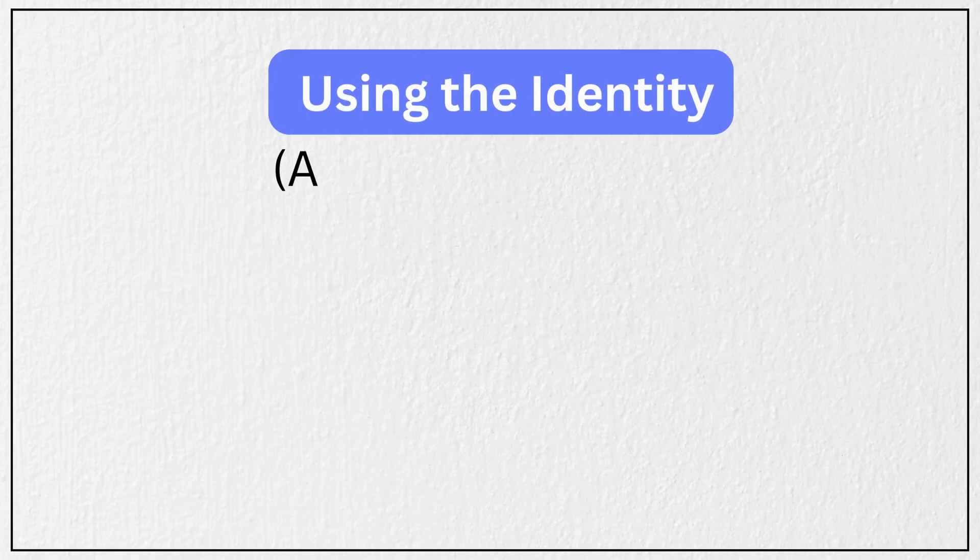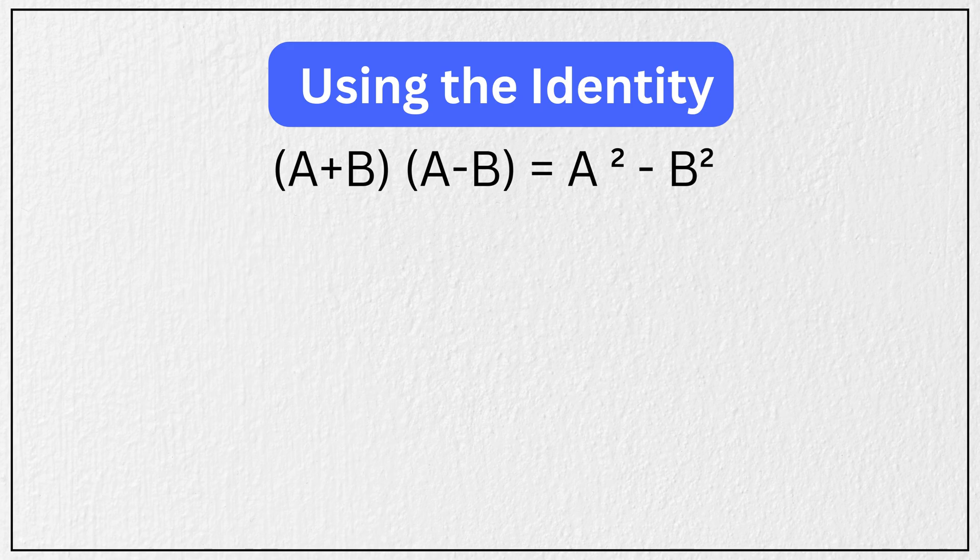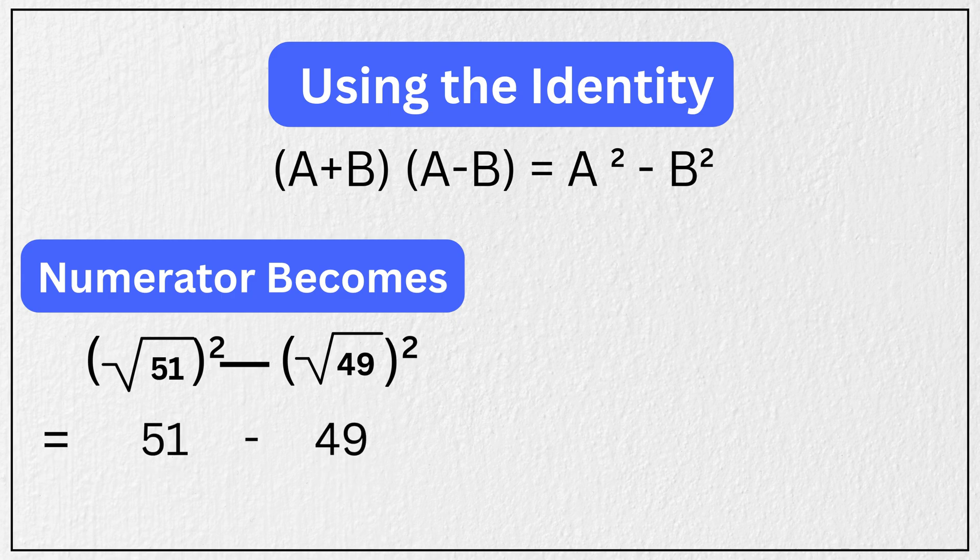Now, using the identity (a+b)(a-b) = a² - b², the numerator becomes (√51)² - (√49)² = 51 - 49 = 2.